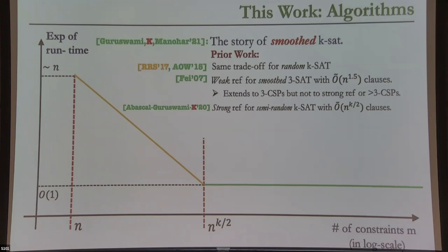Question: what does it mean to start with a worst-case instance? Answer: take a completely arbitrary KSAT formula, then perturb the literals. The starting formula may be satisfiable, so it may not even make sense to ask a refutation question for it. But if you perturb the literal patterns, you're going to create an unsatisfiable formula.